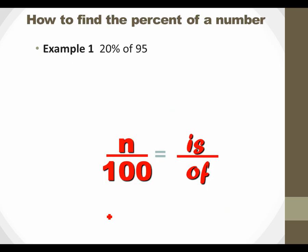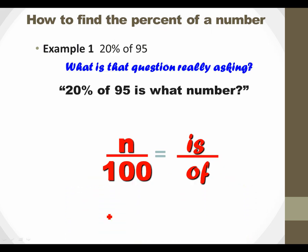So here's your first problem, 20% of 95. We don't have an is, so let's go ahead and just make up what the is is going to be. So this question is really asking 20% of 95 is what? 20% of 95 is what number? So now we have a percent, we have our percent, we have an of, and we have an is. So now let's break it down and figure out what part goes where.